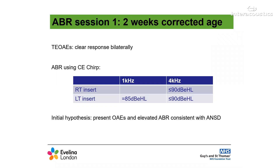In the first appointment, baby was two weeks corrected age and results were as follows. OAEs were present bilaterally. ABR in the right at 4 kHz results were less than or equal to 90 dB EHL. On the left at 1 kHz results were equal to 85 dB EHL and at 4 kHz less than or equal to 90 dB EHL. Therefore, with elevated ABRs and present OAEs, this pattern of results is consistent with ANSD.